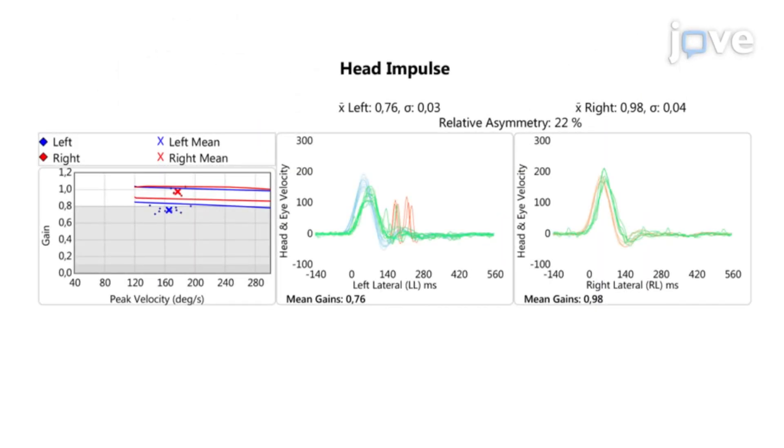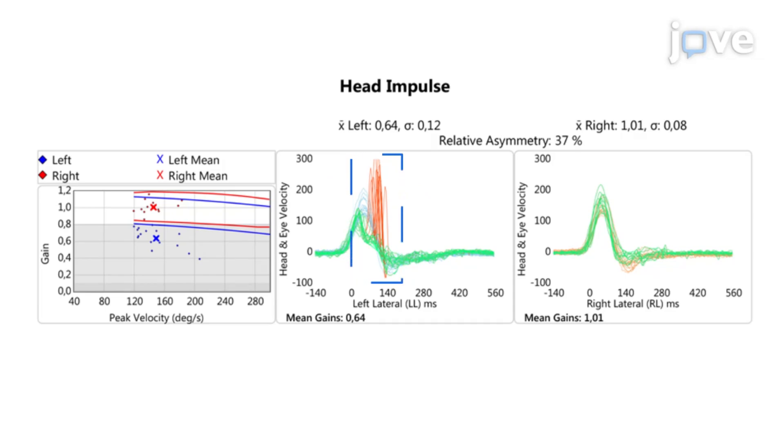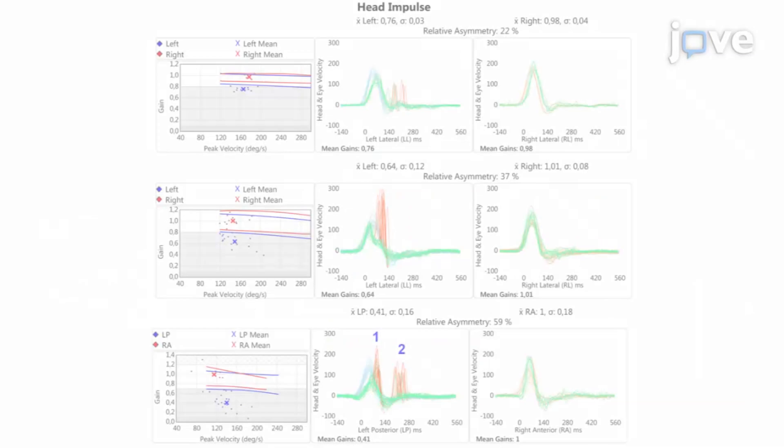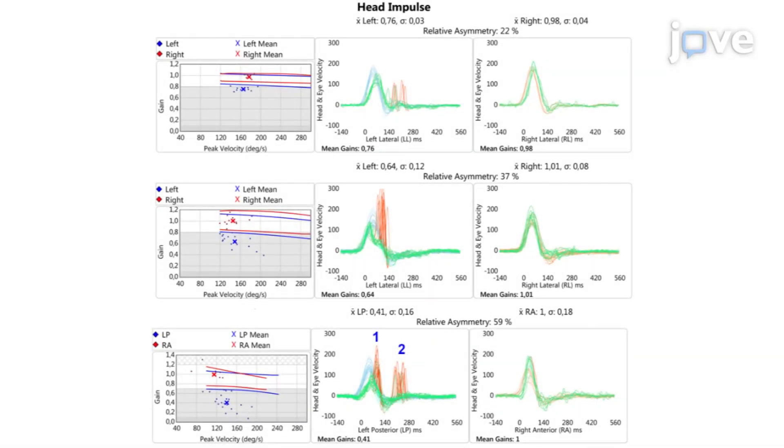Following complete testing of all 6 SCCs with VHIT system B, overt saccades are seen after head movement has stopped, covert saccades are seen during the head movement, and sometimes a mixture of both are seen. With overt or covert saccades, accompanying mean gain values also need to be too low in order for a test to be interpreted as being truly pathological.